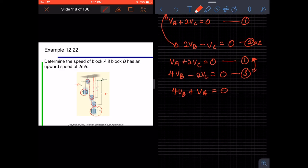So now since we have 4VB plus VA equals 0, and we know that VB has the speed of 2 meter per second upwards, we can say that VB if going up is negative. So 4 times minus 2 plus VA equals 0. So VA equals plus 8 meter per second. Going up is negative, so going down is positive.